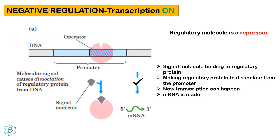In the case of negative regulation with transcription ON: the regulatory molecule here is a repressor. When the signal molecule binds to the regulatory protein, it causes the regulatory protein to dissociate from the promoter. Now transcription can happen and mRNA can be made — transcription is on.